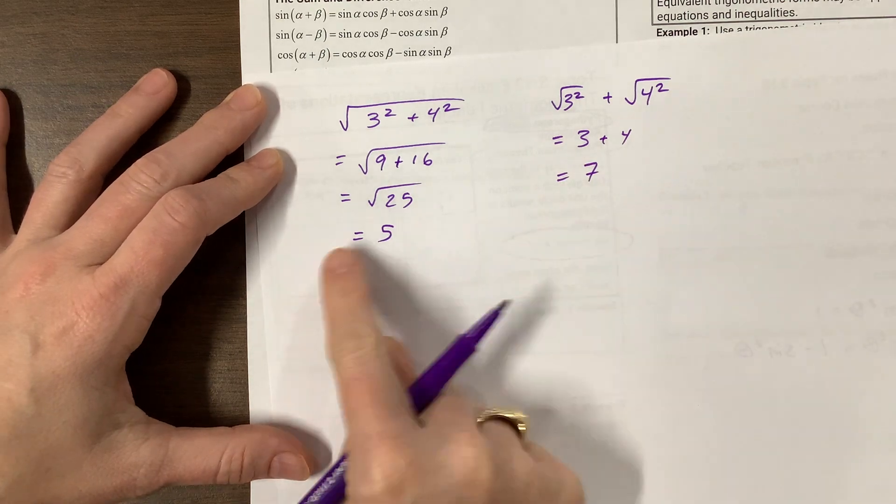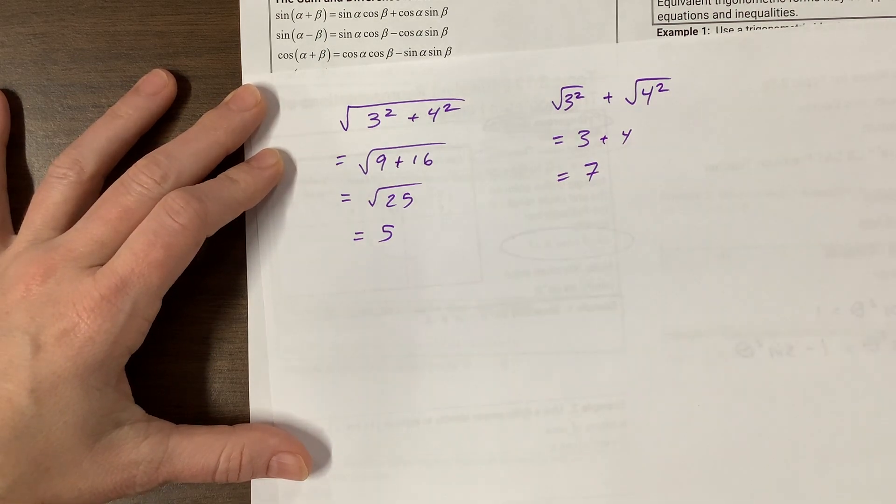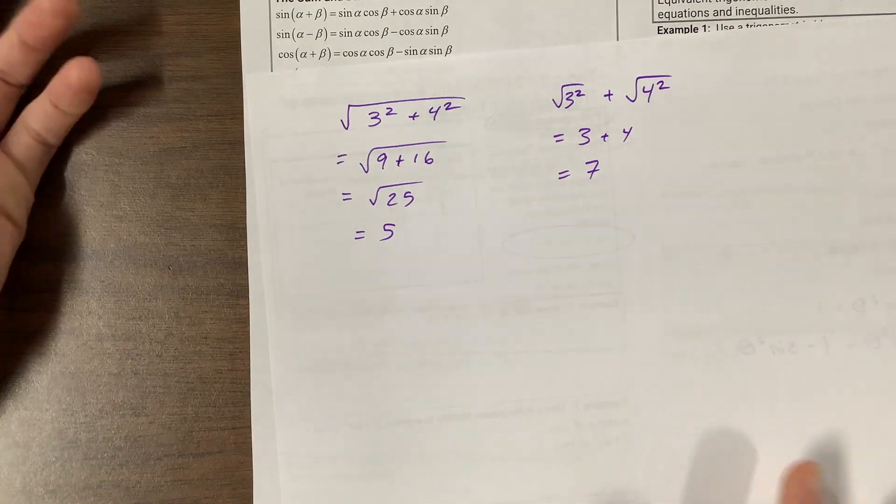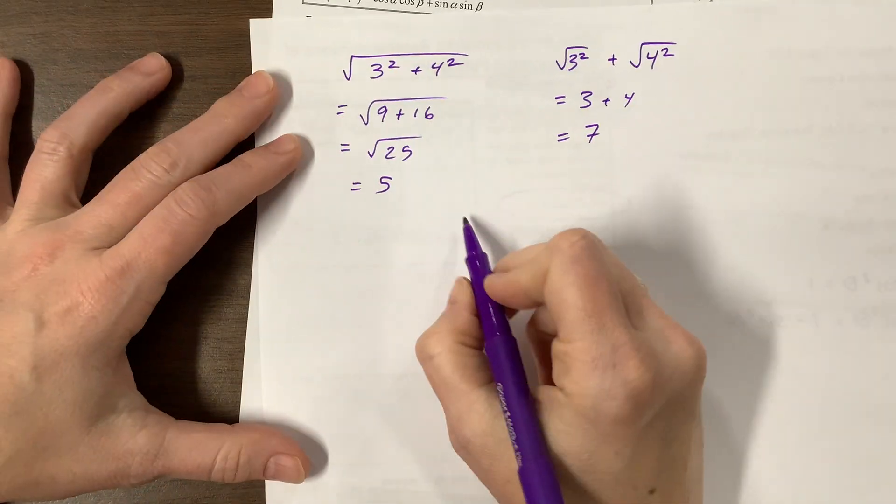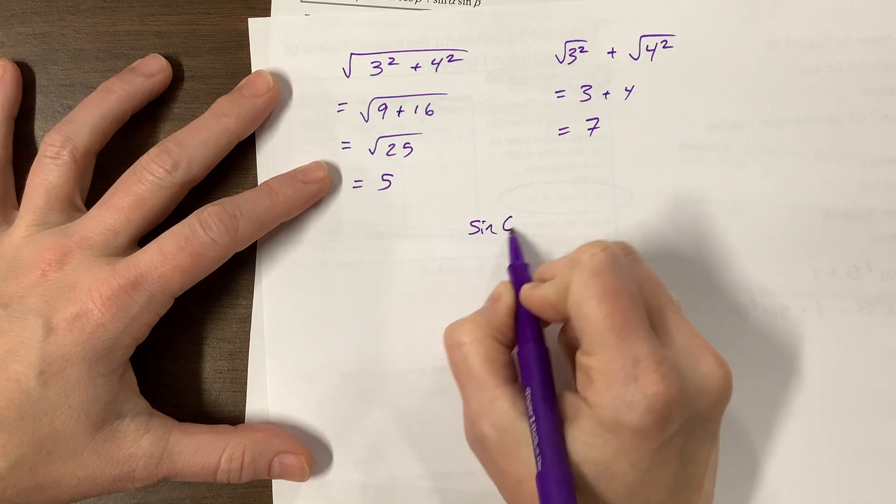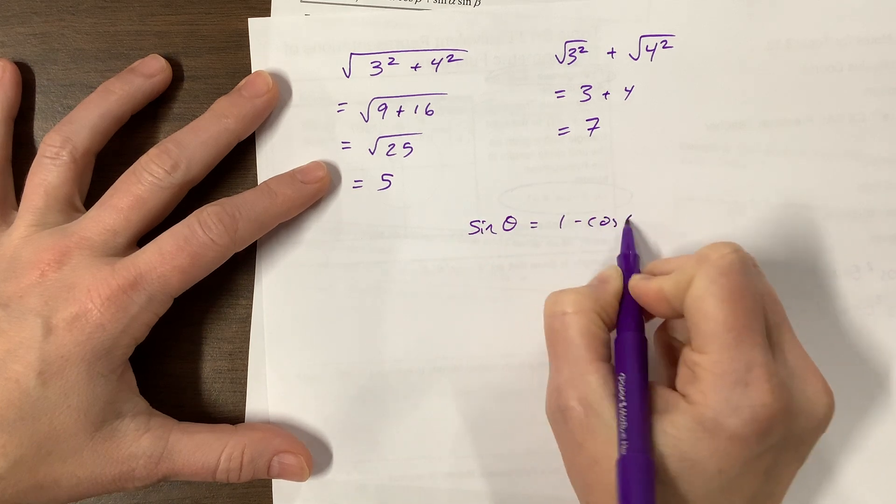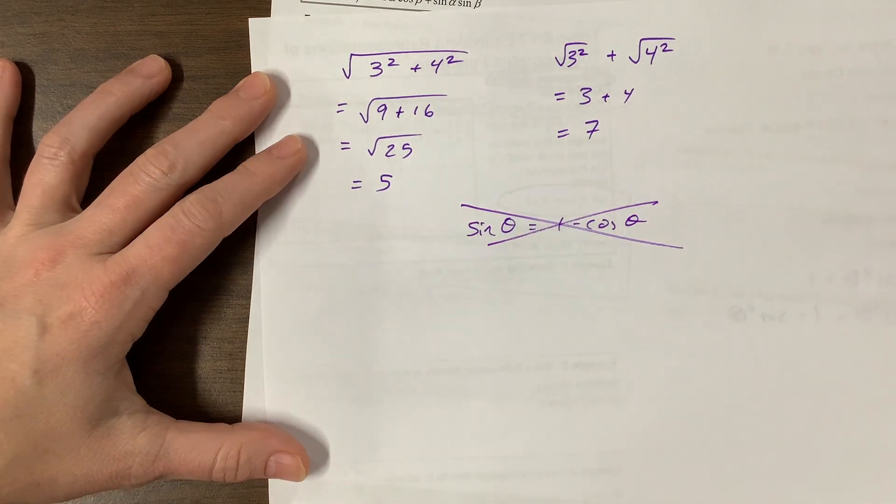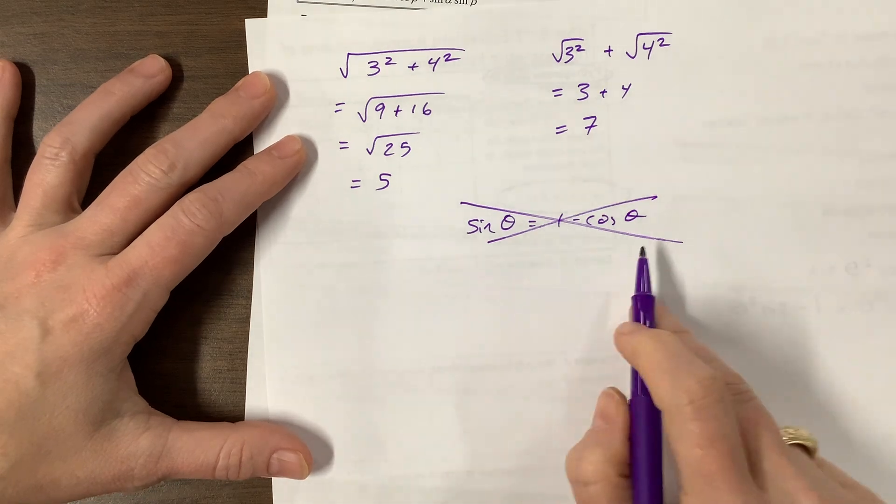And if you think those are equivalent, I'm going to give you five million dollars, and you can give me seven million dollars back. But so point being, never, never, never, never say that sine of theta is equal to one minus cosine theta. This is wrong. Absolutely, positively wrong. Sine squared is equal to one minus cosine squared.